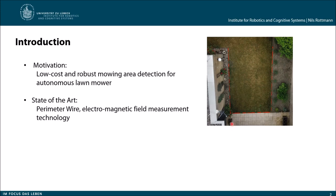So what is the state of the art? The state of the art is a perimeter wire, and the perimeter wire gets buried here at the boundary line. This is really expensive because you need to bury it and often you need a special machine to do that.